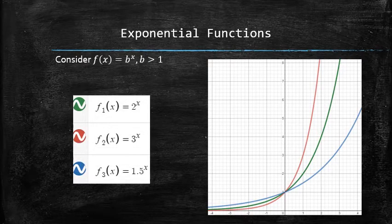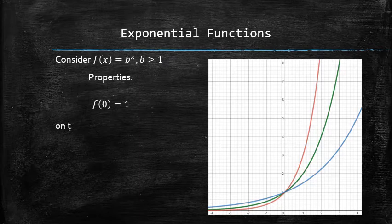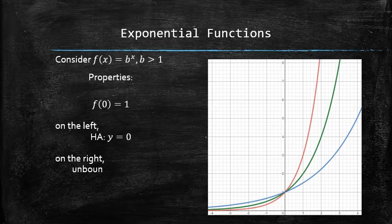We can easily graph a variety of functions with different bases that satisfy the criteria. We notice that all of them have some common properties. For example, the y-intercept is always 1. On the left, the graph approaches the x-axis. And on the right, the graph goes up indefinitely.